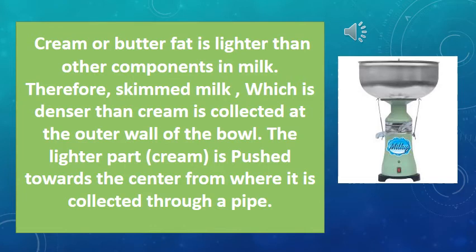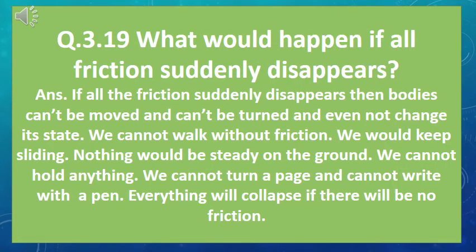Short question: What would happen if all friction suddenly disappeared? If all friction suddenly disappeared, bodies can't be moved, can't be turned, and can't change their state. We can't walk without friction — we would keep sliding. Nothing would be steady on the ground; we can't hold anything, can't turn a page.